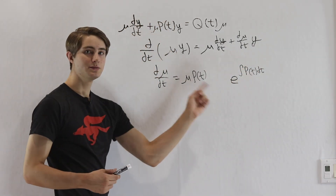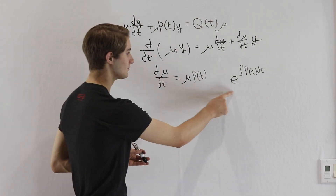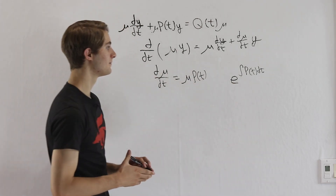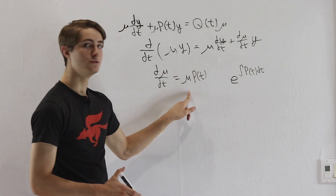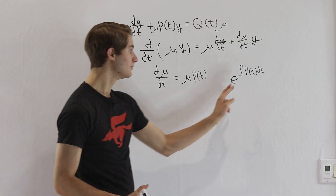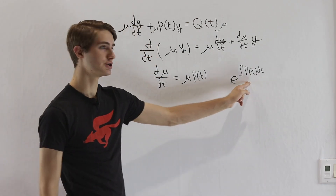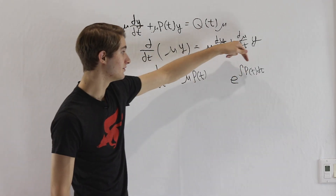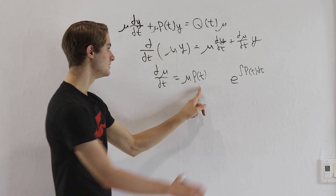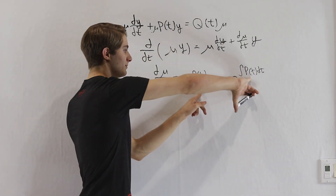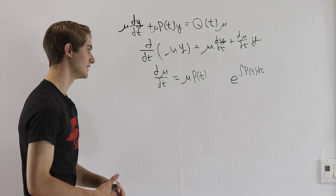The reason we want this is: if we differentiate this function, we'll get our original mu back, and then by the chain rule, we need the derivative of the exponent function. The derivative of an integral just gives us the original back, which means we do get p of t coming out.